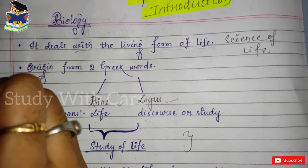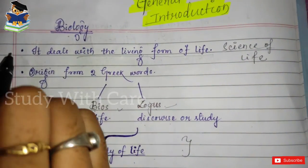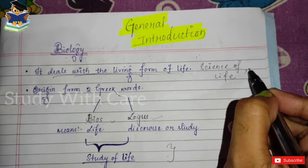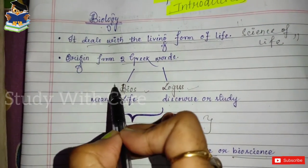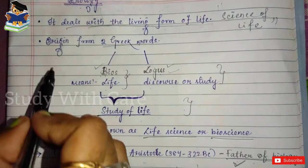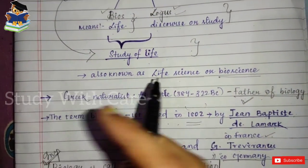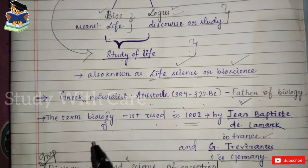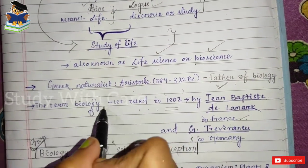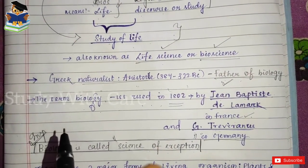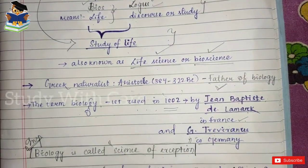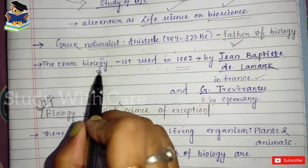Let's recapitulate. Biology is the discipline which deals with living forms of life. It is also known as the science of life. It comes from two Greek words — bios, meaning life, and logos, meaning discourse or study. Biology is also known as life science or bioscience. The father of biology is the Greek naturalist Aristotle.